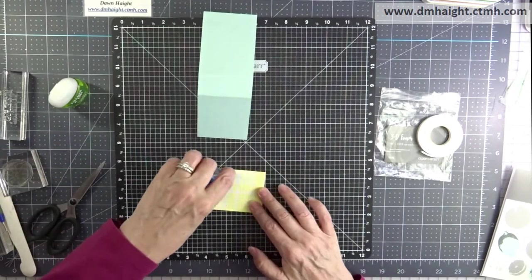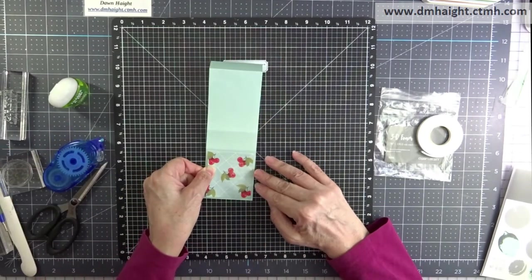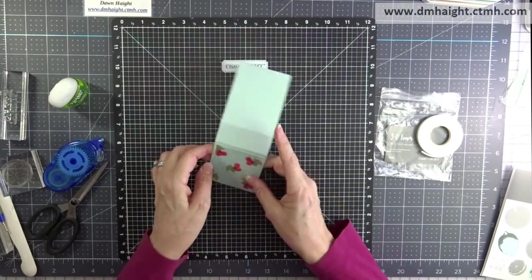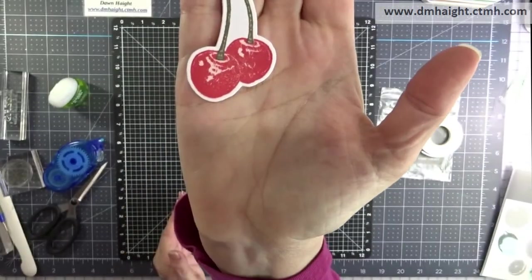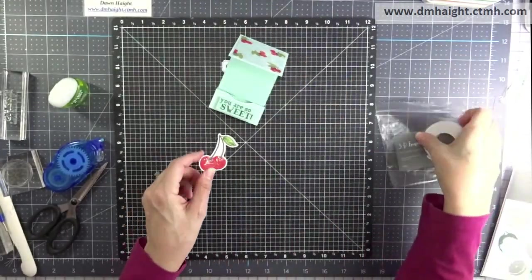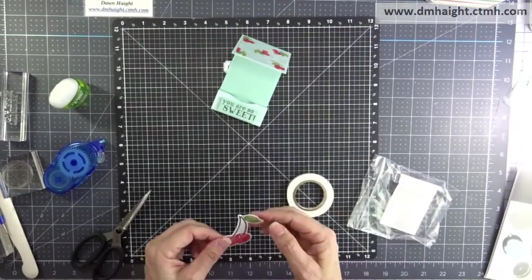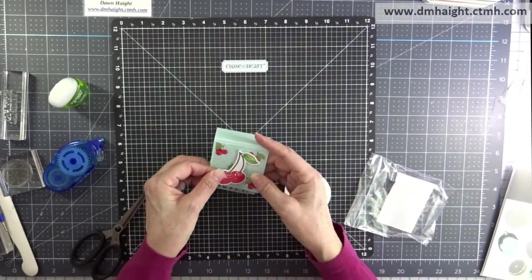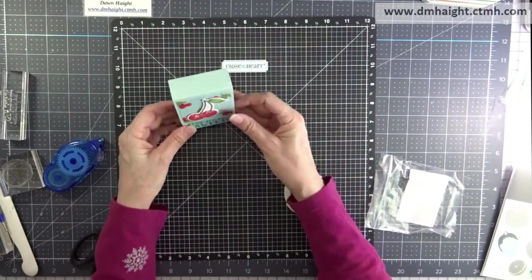Now I have another piece of the Eat Play Love paper and I'm going to put that on the front flap. Off screen I've stamped and cut out the cherries. I'm going to pop that on the front with some foam tape. Keep this one simple. Super cute.